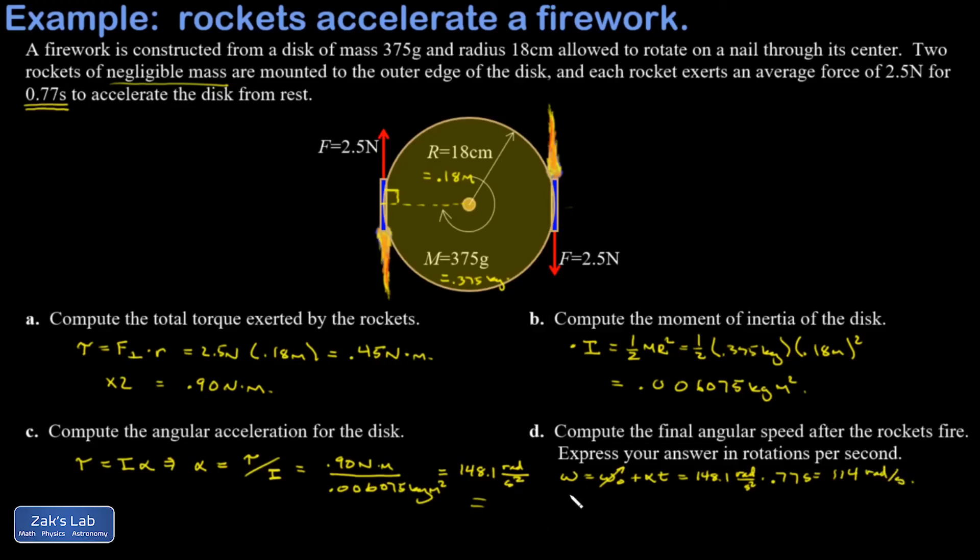I then divide that by 2 pi to get rotations per second. When I do that, I get 18.2 rotations per second.